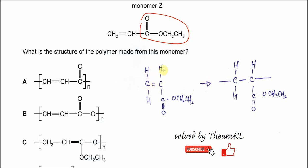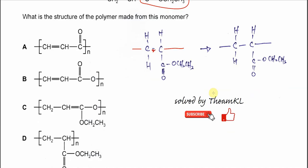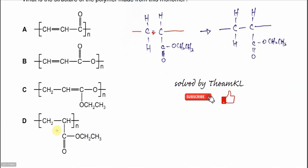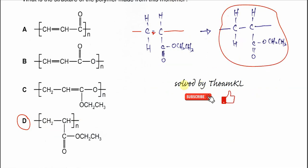When you get this monomer, draw it in this format. The pi bond breaks and you add the tails here, so you get this polymer chain. It's very clear that the answer is D — this is the polymer chain. Okay, that's all. Thank you.